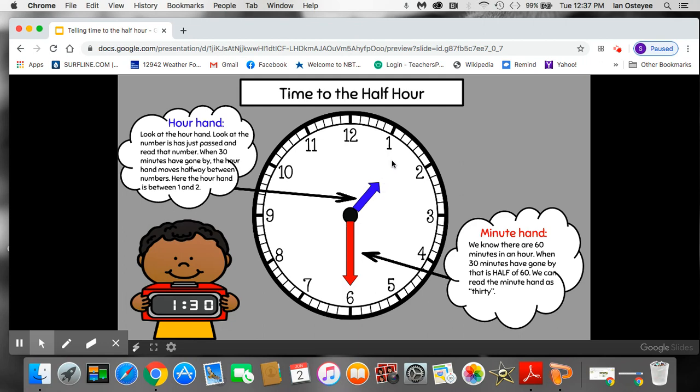So we read the hour hand first. We say 1 and then we read the minute hand 30. 1:30. It is not 2:30 yet because we can't tell the future. We can only know that this hour hand has passed the 1 and the minute hand is down on the 6 when we say 30. The digital clock is easy to read. It tells us the hour and the minutes. 1, 30.